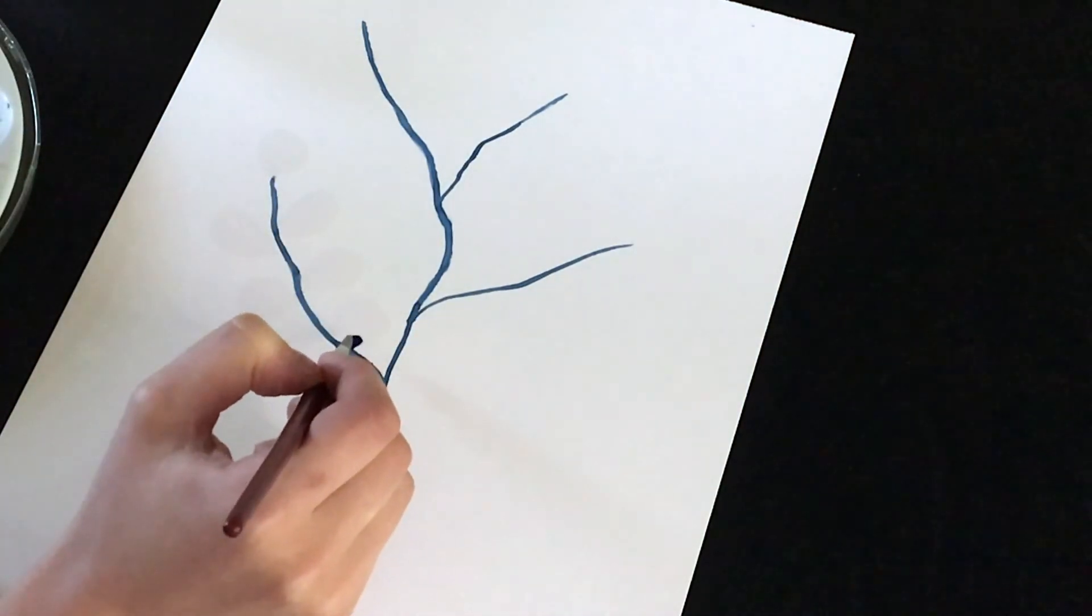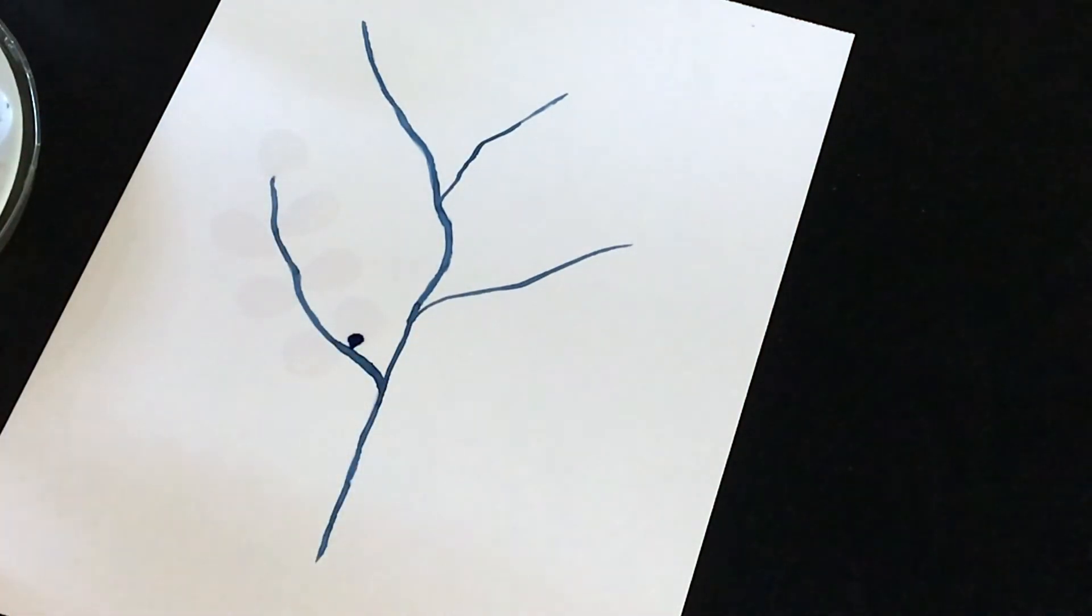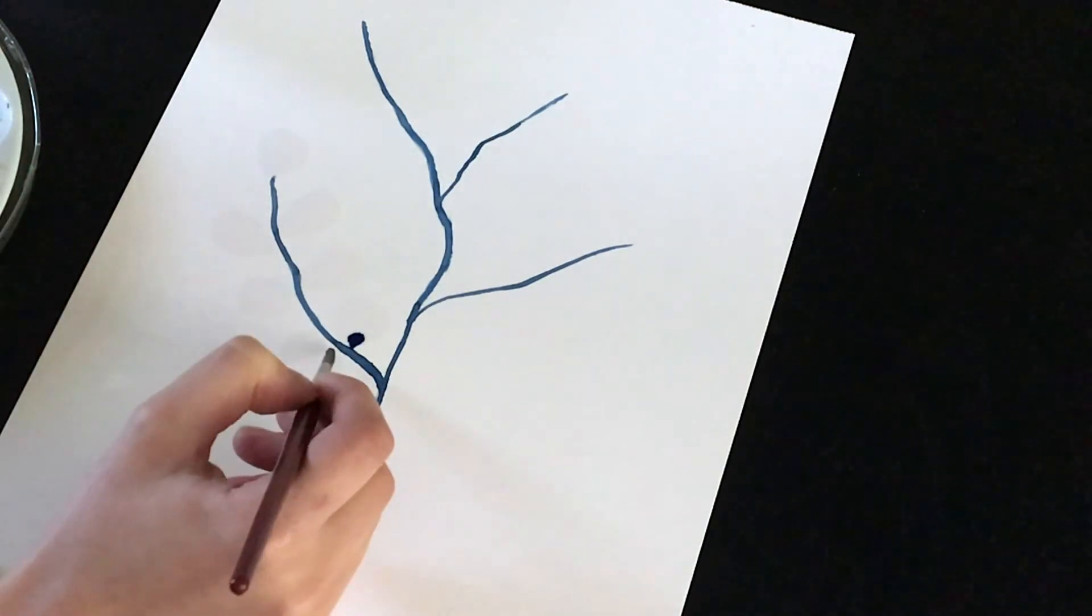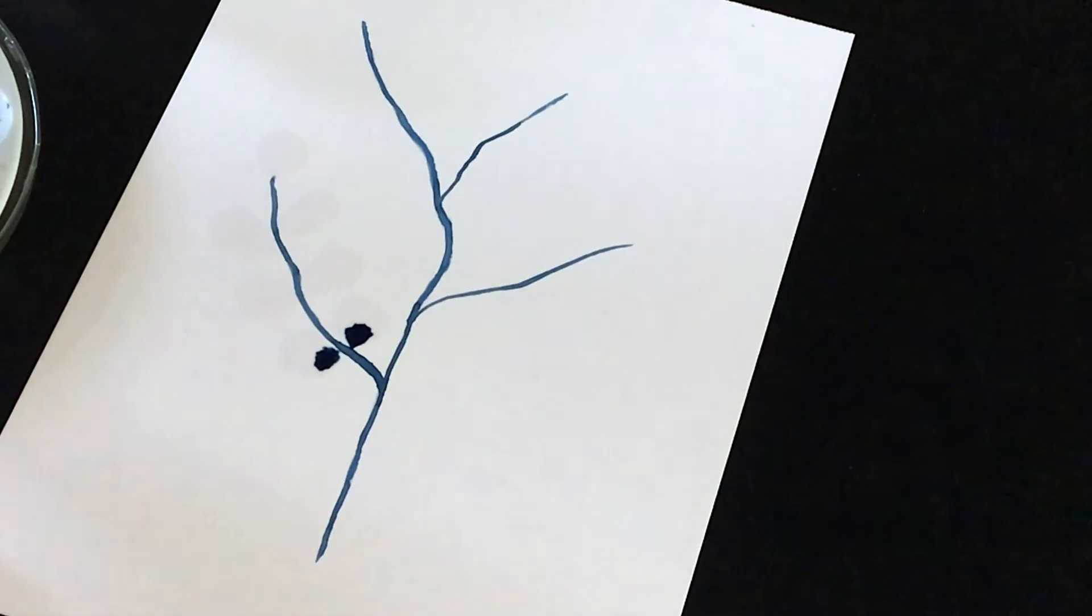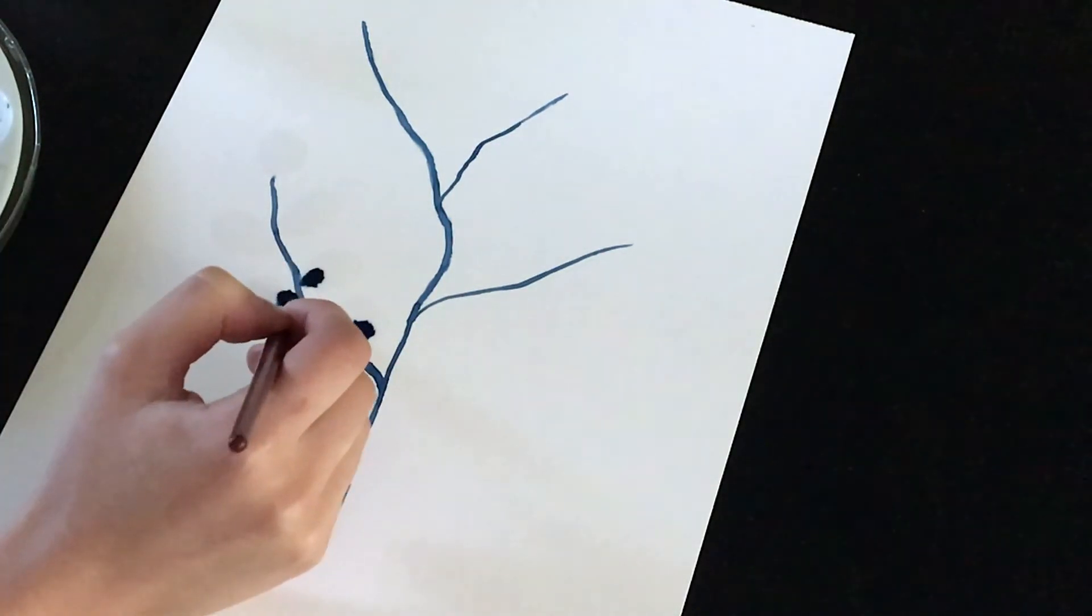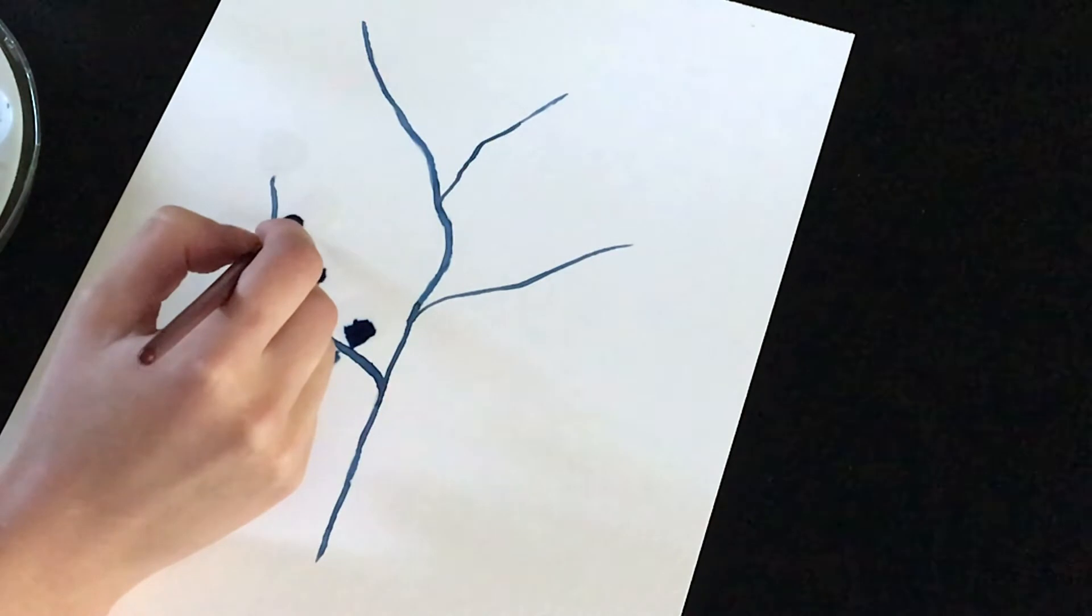Now that those areas are wet, we're going to drop in the paint to color in the leaves. Using that same wet brush, dip into the paint and pick it up. Then just dot the brush at the base of the leaf where it meets the stem. You'll see the color begin to spread from that point across where you applied the water before, making its own pattern.